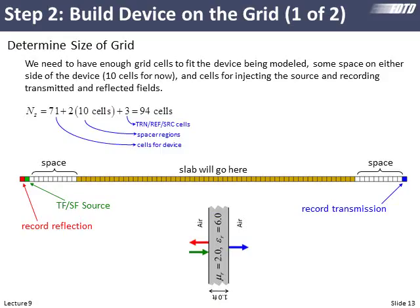Then we calculated our grid and we were going to leave 71 cells for the device. We calculated that's how many cells wide it was on the previous slide. We want to put a spacer region in of about 10 cells on either side so that's a total of 20 cells and then we add a few cells in there for where we do our sources and record points. Total of 94 cells is what we ended up with.